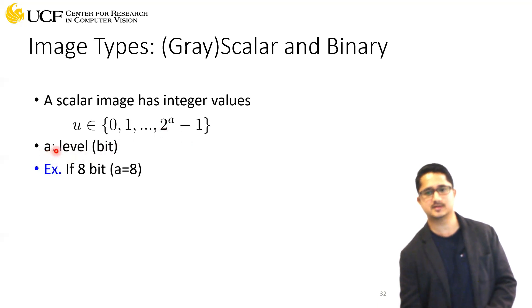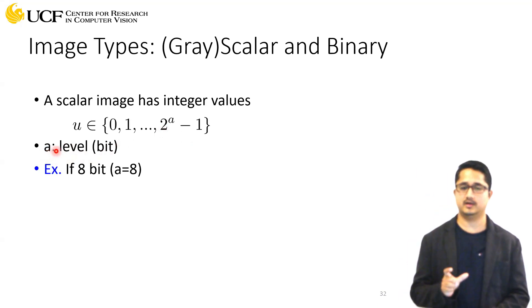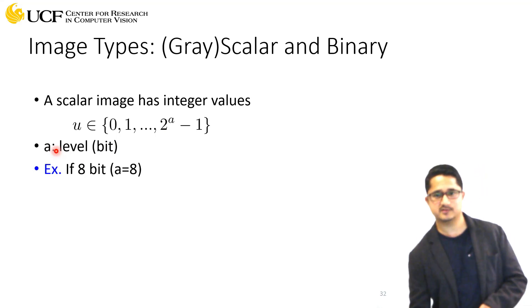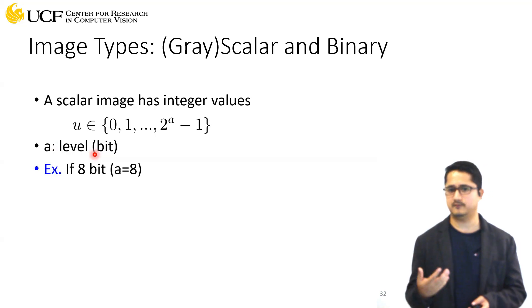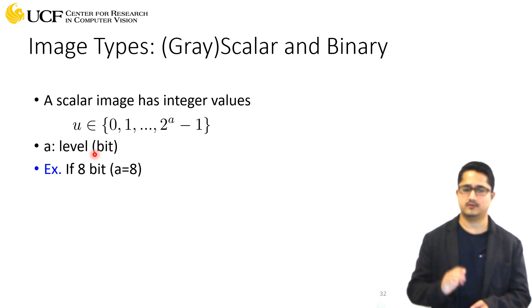A higher bit level means you can have a higher range of values, making your image more detailed. If 'a' is very small, you won't have many possible values. Higher bit level means a finely defined image, but low bit level means a coarse level image.